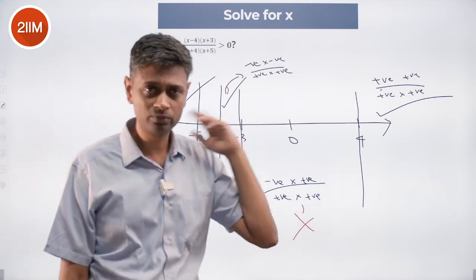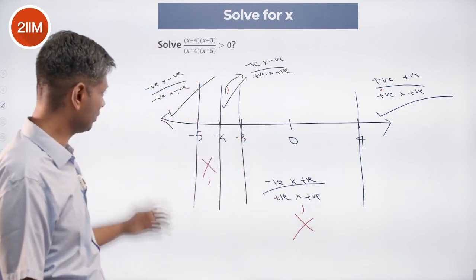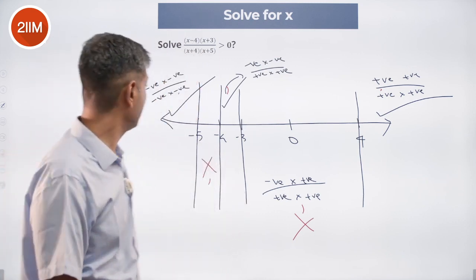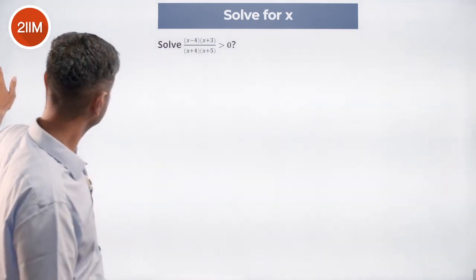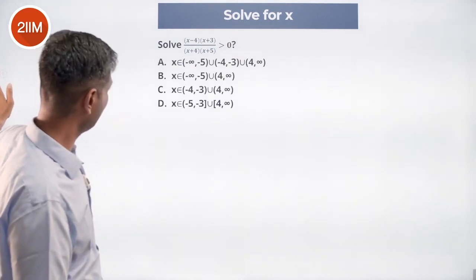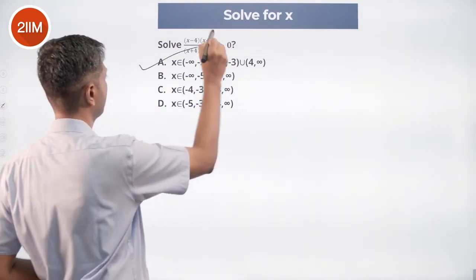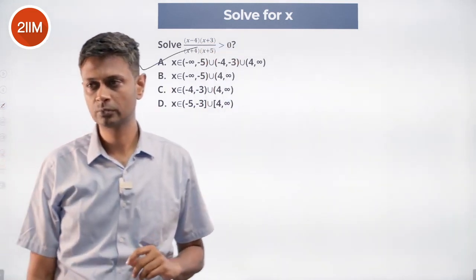So x is greater than 4 or less than minus 5 or sit between minus 4 and minus 3. So minus infinity to minus 5, minus 4 to minus 3, minus 4 to infinity. Algebra and choice A. Lovely.